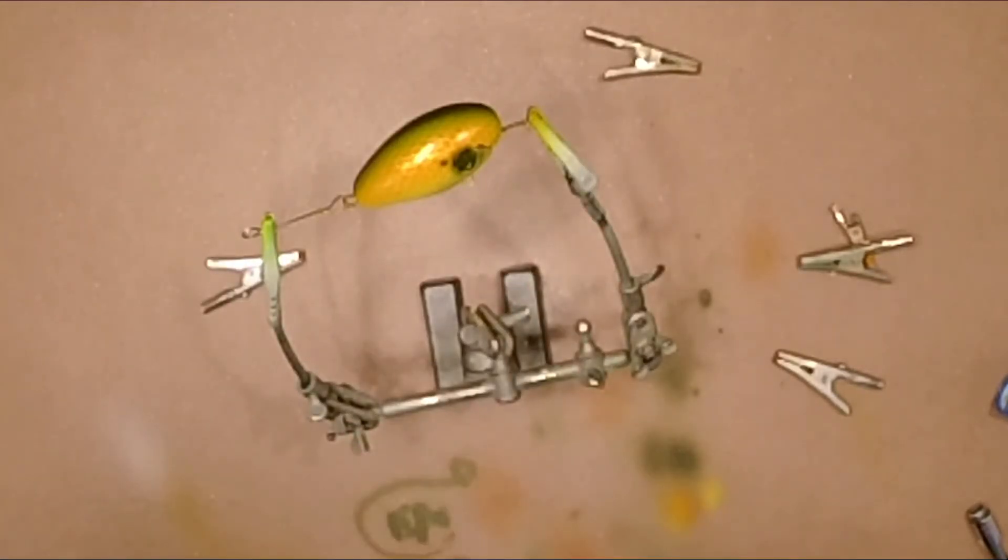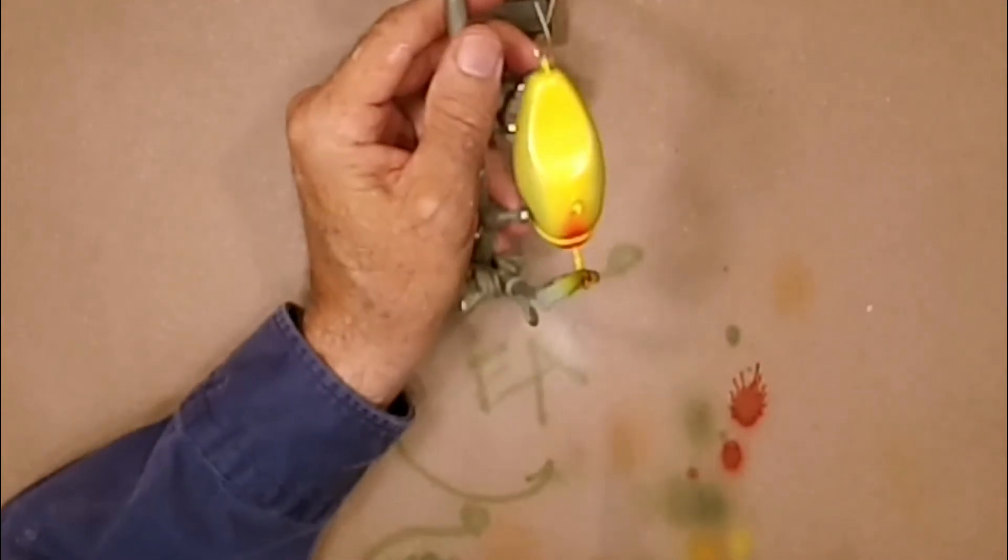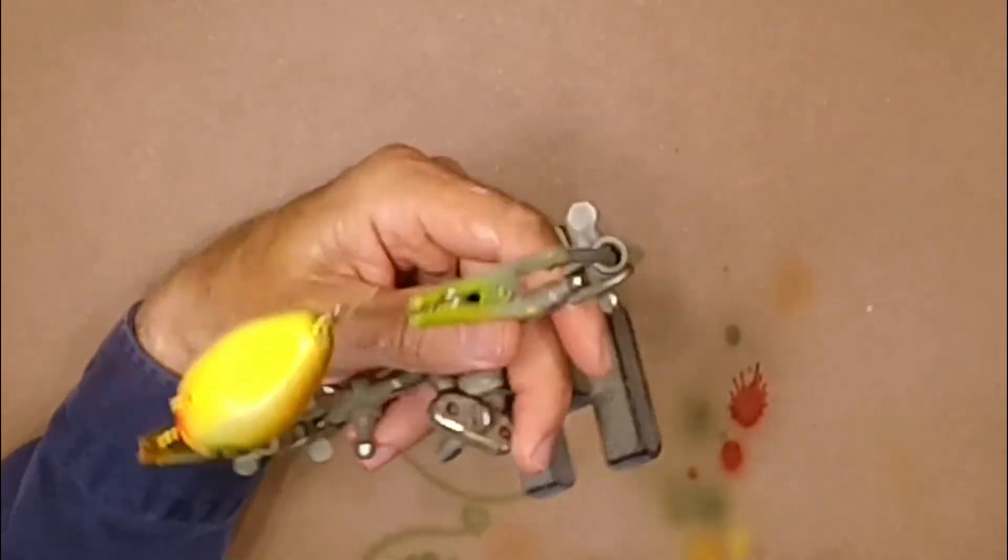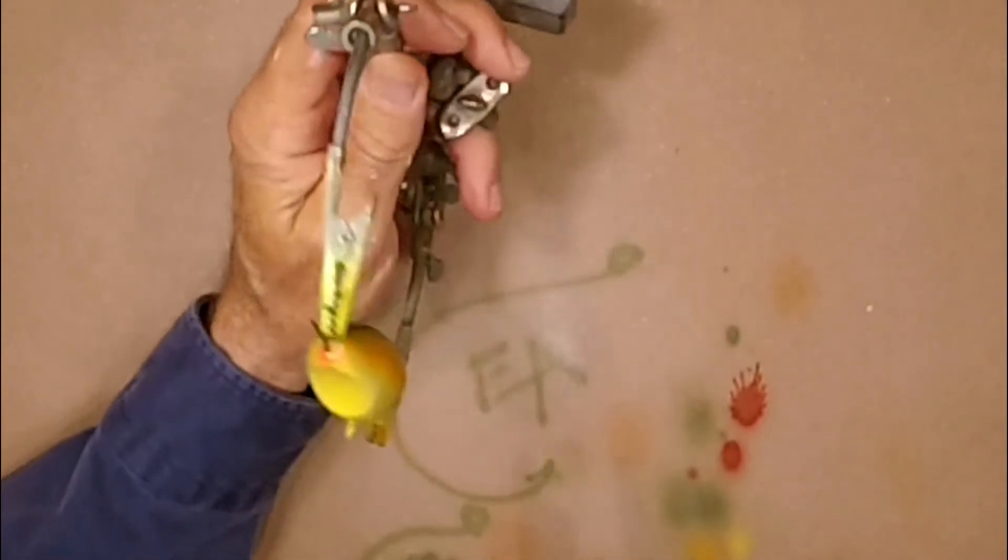Now a little red on the chin, some eyeballs, and some clear coat. That's time to clean up, put eyes on, and clear coat.